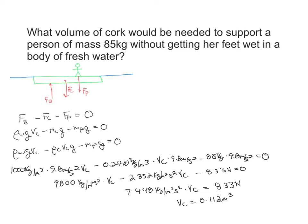In order to solve this, I'm going to sum forces. I have three forces at work here: the buoyant force pushing up, the weight of the raft made out of cork pushing down, and the weight of the person pushing down. So the buoyant force minus the force of the cork minus the force of the person equals zero.